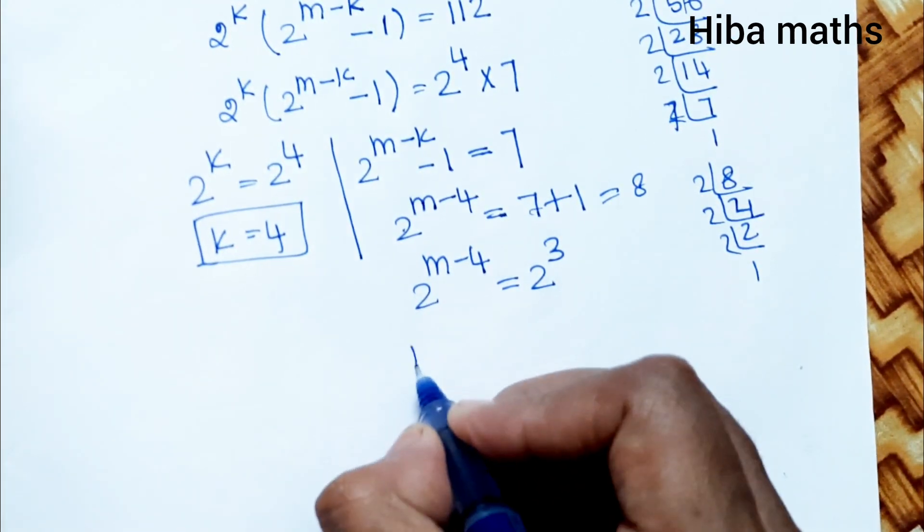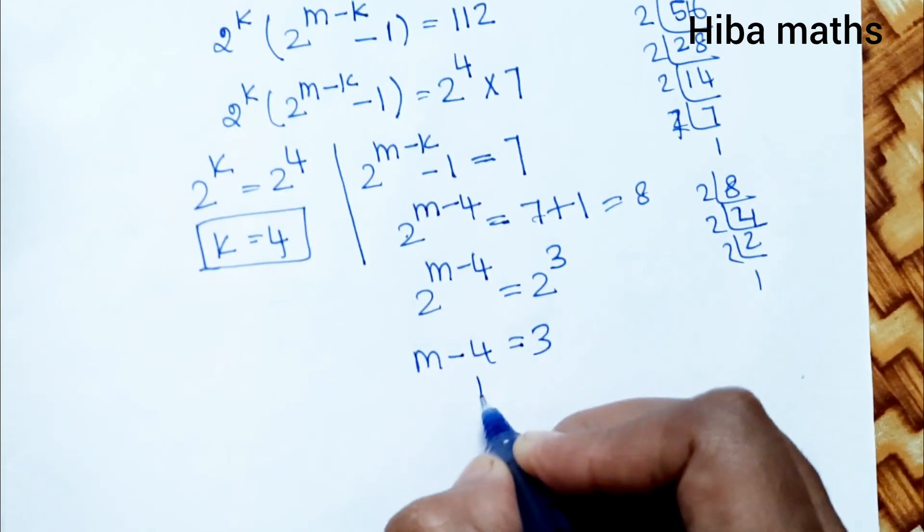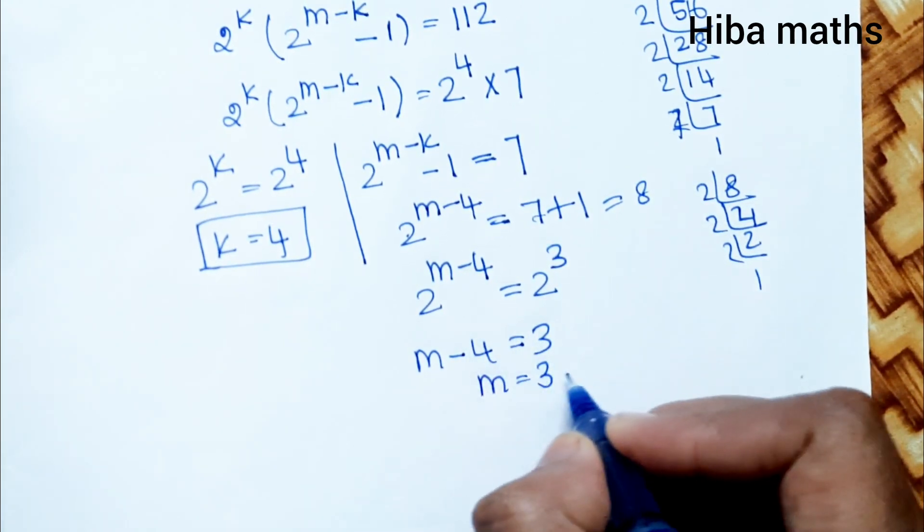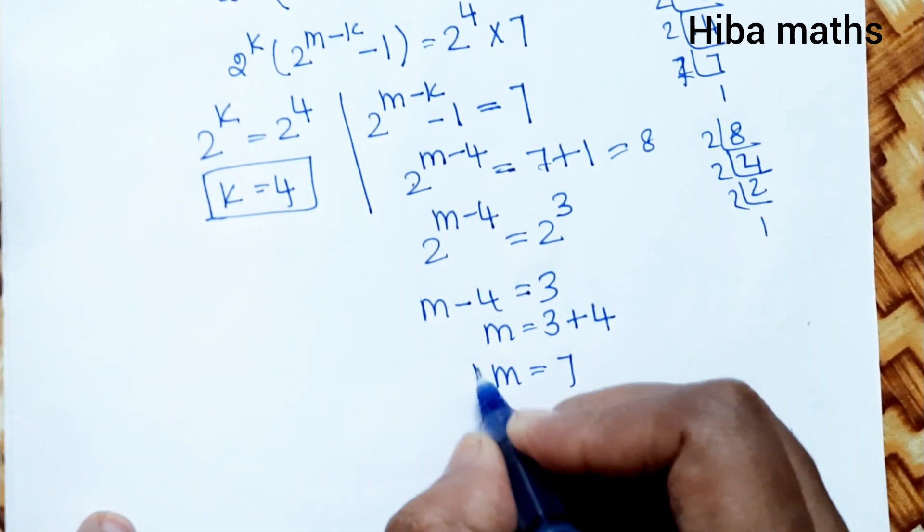8 prime factorization: 2, 4; 2, 2; 2, 1 = 2^3. Now bases are equal, so powers are equal: M - 4 = 3. Therefore M = 3 + 4, M = 7.